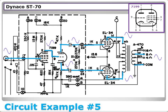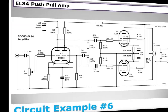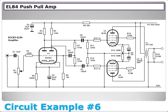The gain stage and phase splitter in the ST70 use the 7199 tube — a very cool design where inside one glass envelope you have both a pentode and a triode. So even though the schematic shows what looks like two separate tubes, it's actually one physical tube. The pentode serves as the gain stage and the triode as the unity-gain cathode-dyne phase splitter.